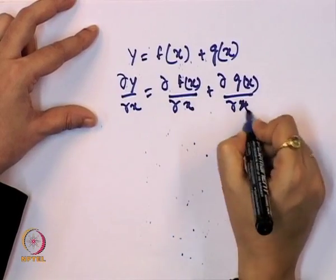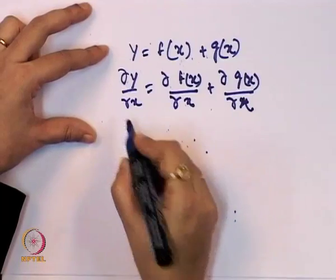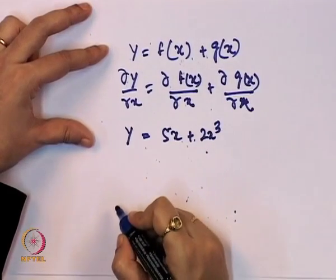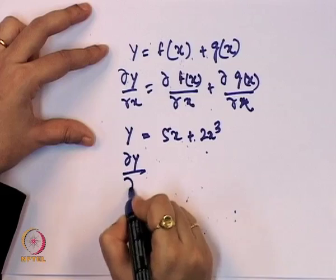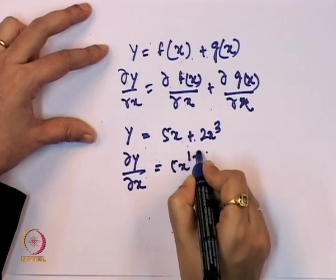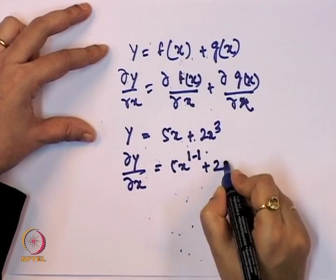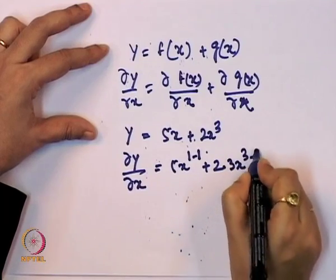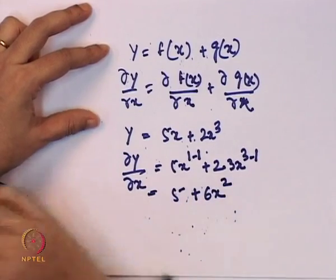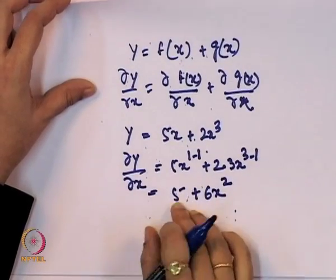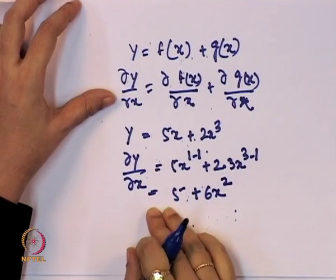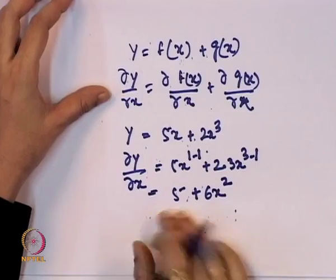Let us assign a numerical example. Suppose y = 5x + 2x³. Taking the first order derivative: dy/dx = 5·x^(1-1) + 2·3·x^(3-1) = 5 + 6x².